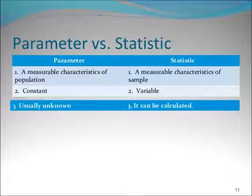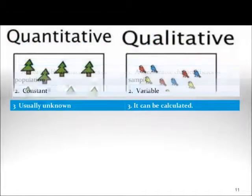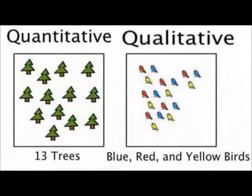We go on to variables. Variables are the characteristics of the individuals within the population. Qualitative or categorical variables allow for classifications of individuals based on some attribute or characteristic.